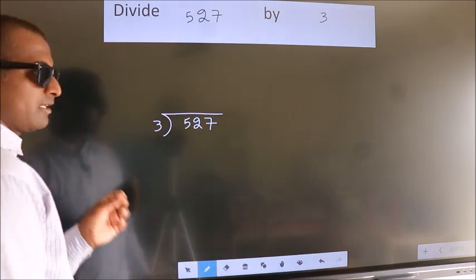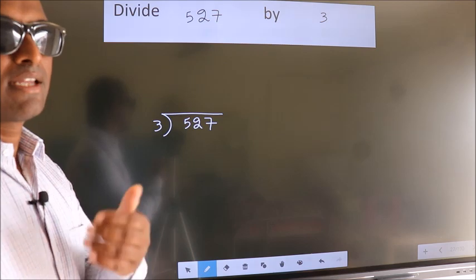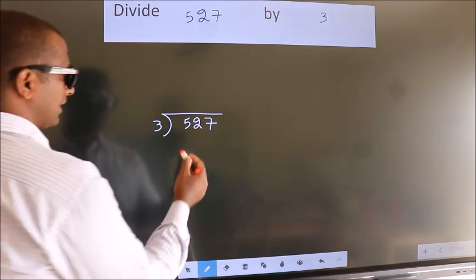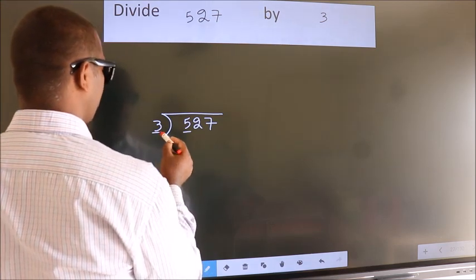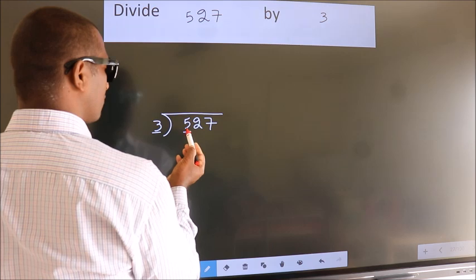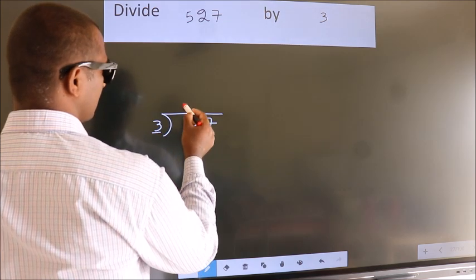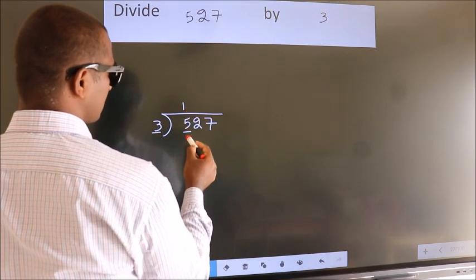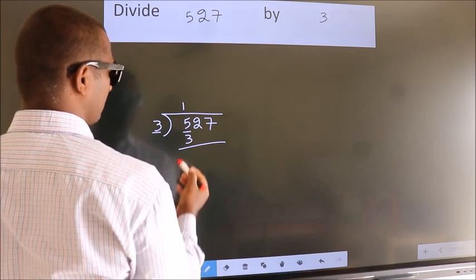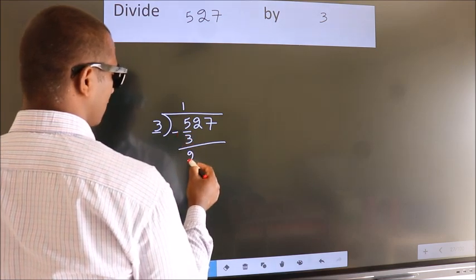This is your step 1. Here we have 3, here 5. A number close to 5 in the 3 table is 3 1s = 3. Now we should subtract. We get 2.